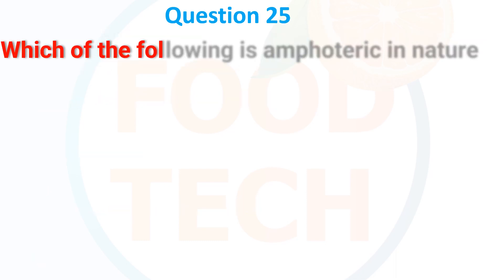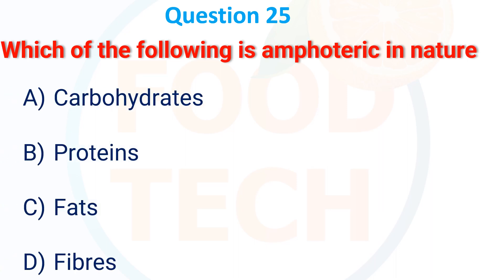Which of the following is amphoteric in nature? A) carbohydrate, B) protein, C) fat, D) fiber. The answer is B — protein.